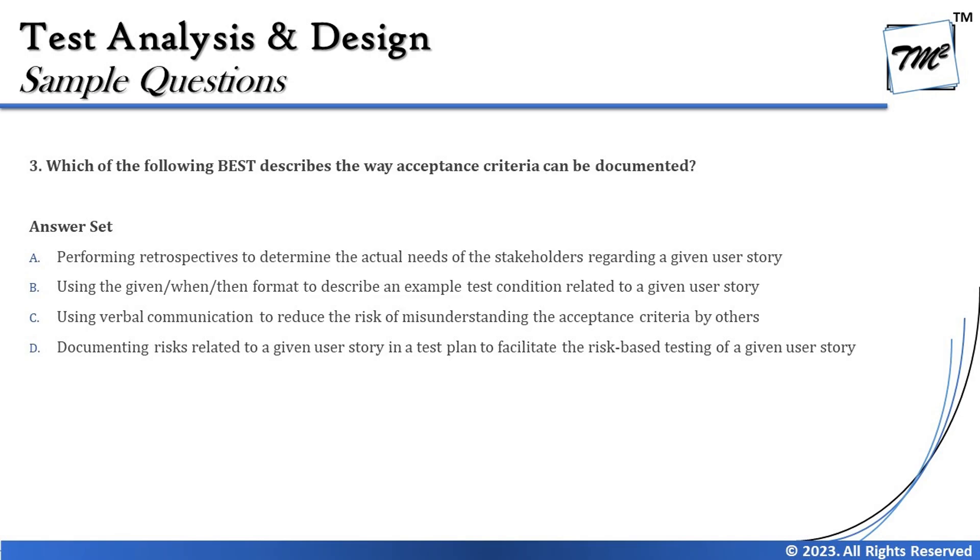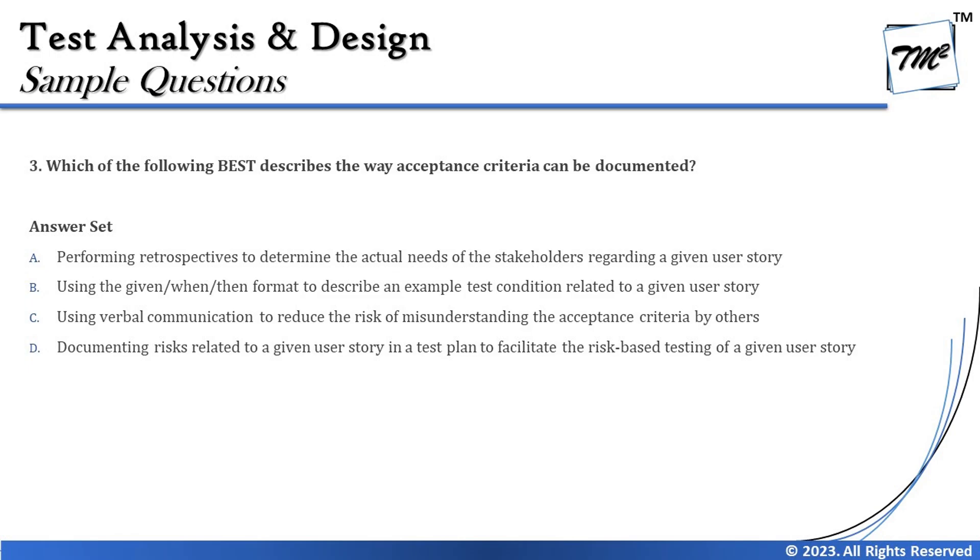Option B says: 'Using the Given/When/Then format to describe an example test condition related to a given user story.' There are two ways to write acceptance criteria: bullet-point style, and the Given/When/Then format — a Gherkin-style language used to define acceptance criteria. This makes sense, but let's cross-check with C and D. Option C says: 'Using verbal communication to reduce the risk of misunderstanding.' However, even in agile, acceptance criteria are preferred to be documented, so verbal communication is not the best approach.